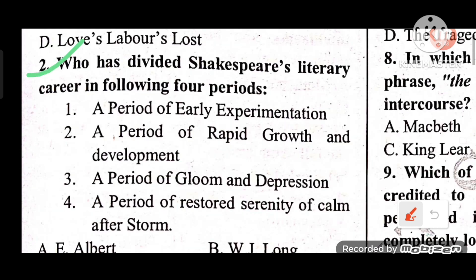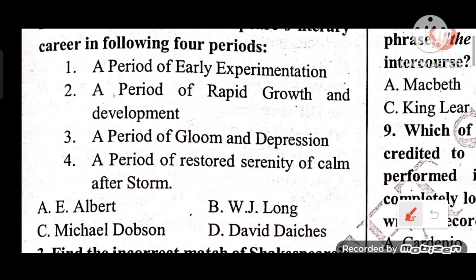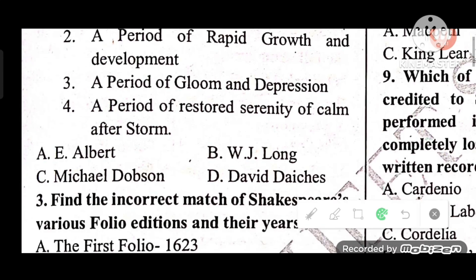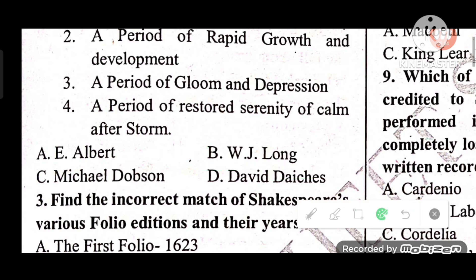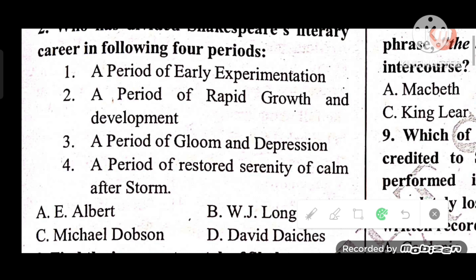Question 2: Who has divided Shakespeare's literary career into 4 periods — a period of early experimentation, a period of rapid growth and development, a period of gloom and depression, and a last period of restored serenity or calm after storm? Options: A) E. Albert, B) W.J. Long, C) Michael Dobson, D) David Daiches. The answer is B — W.J. Long divided Shakespeare's literary career into those 4 periods.